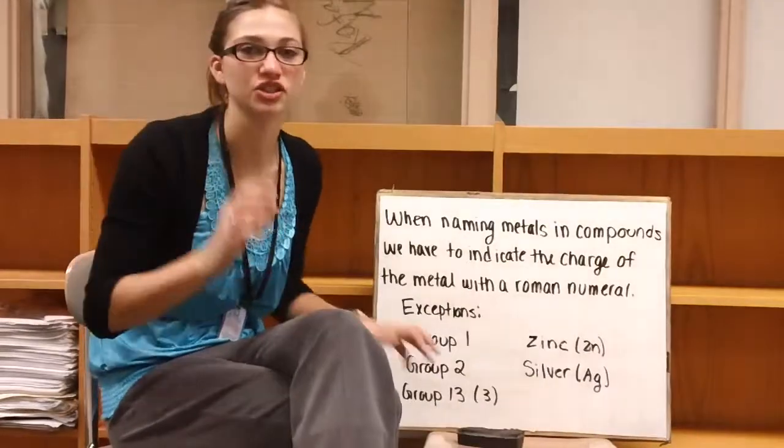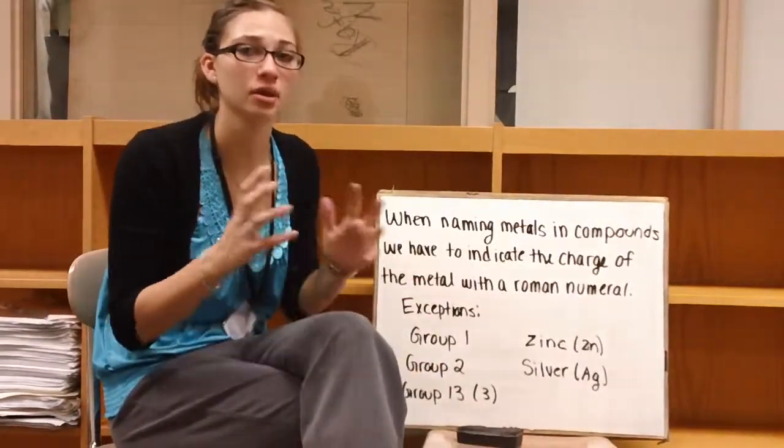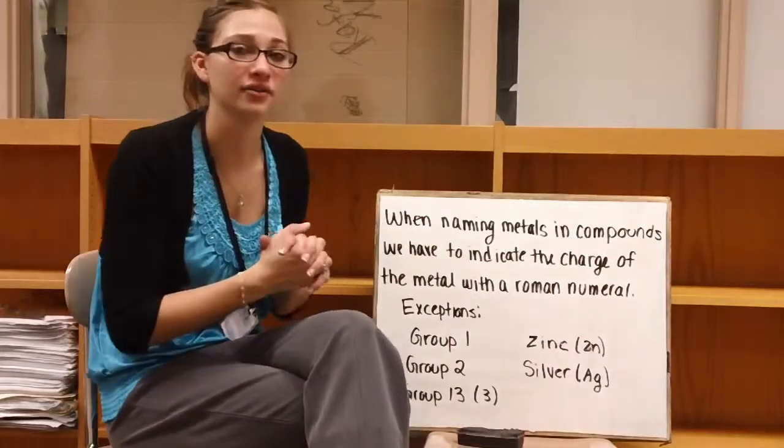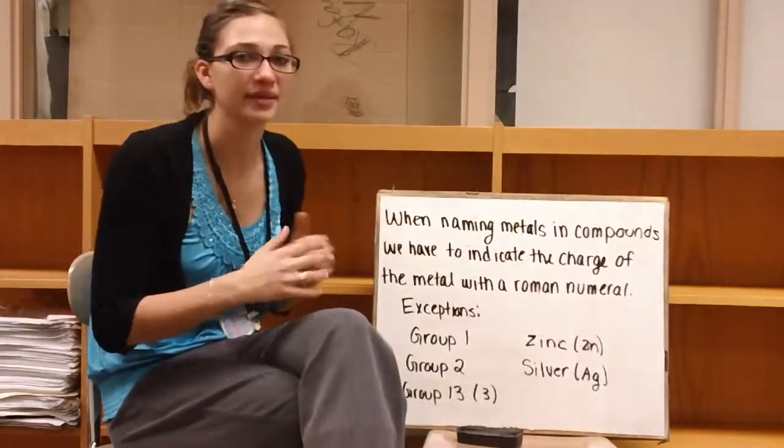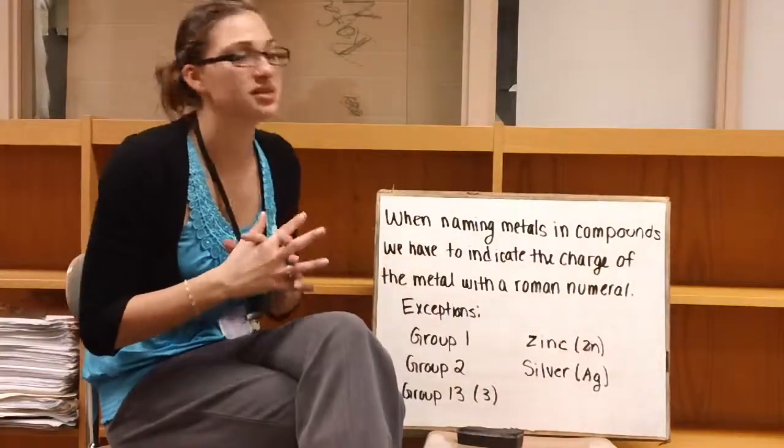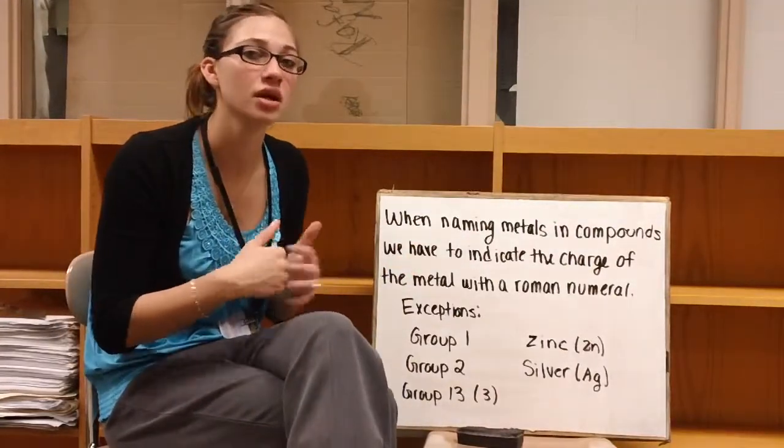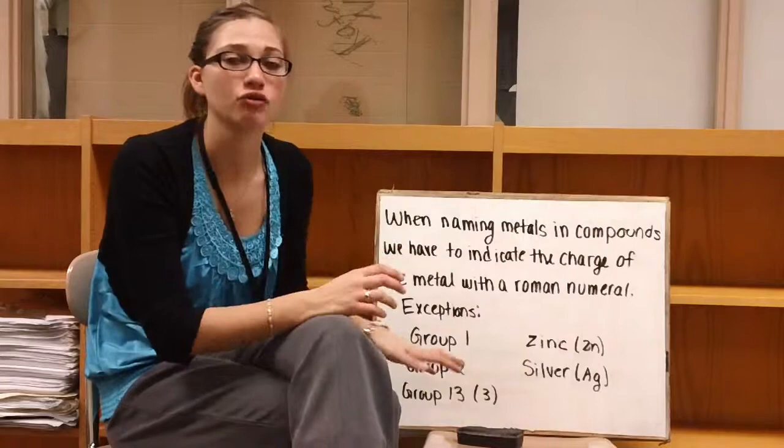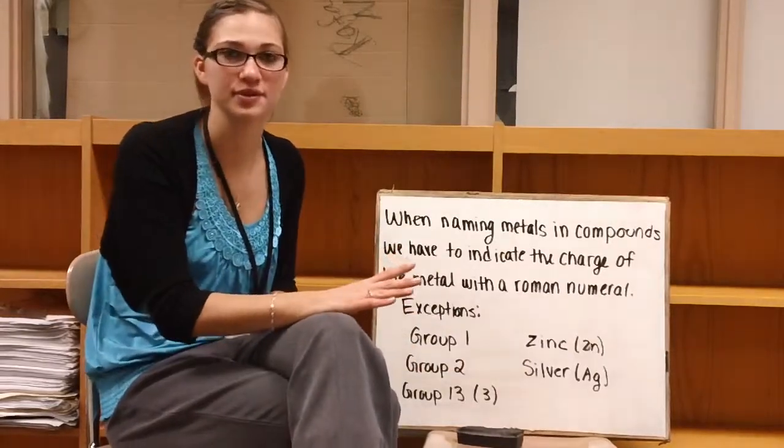Today we're going to talk about transition metals and how to incorporate them when we're naming our different compounds. Something that we have to keep in mind is when we're naming our metals, we have to indicate the charge of the metal with a Roman numeral. There are some exceptions to this rule though.